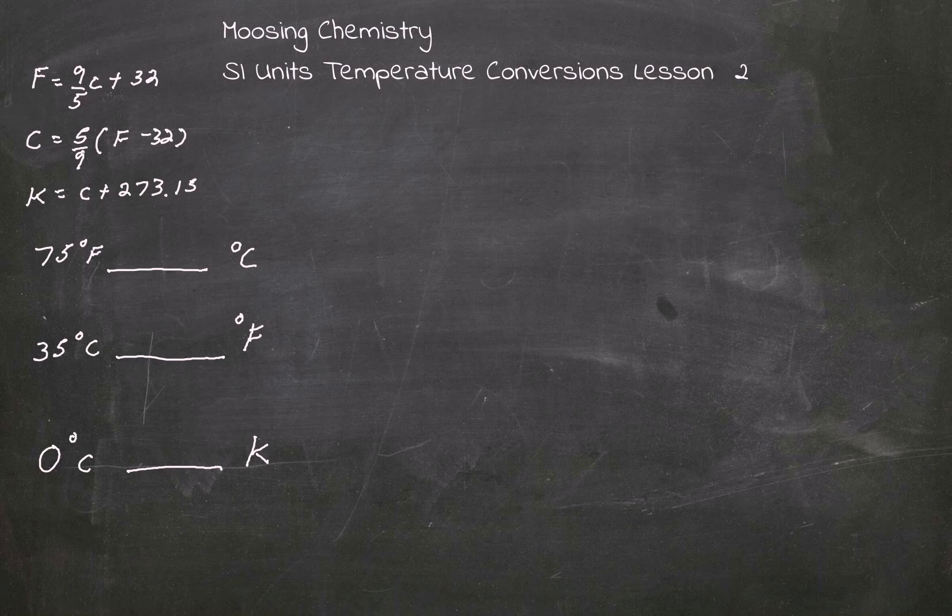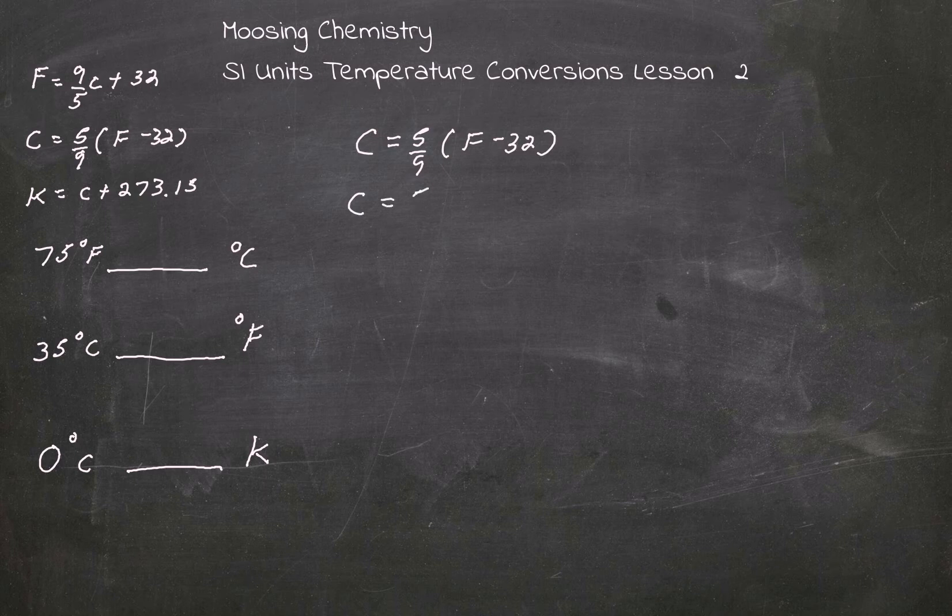We're going to use the formula C equals 5 over 9 times F minus 32. So C equals 5 over 9 times 75 minus 32.